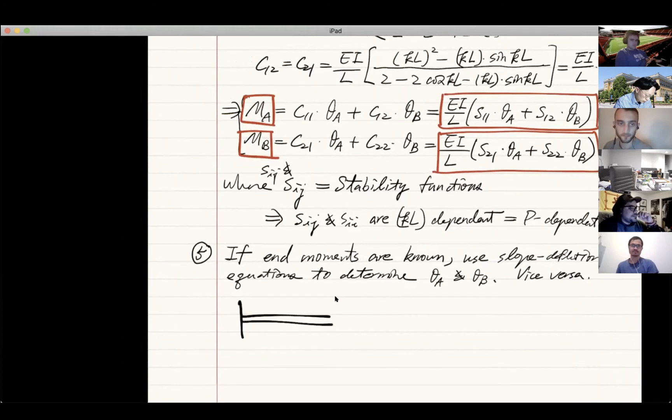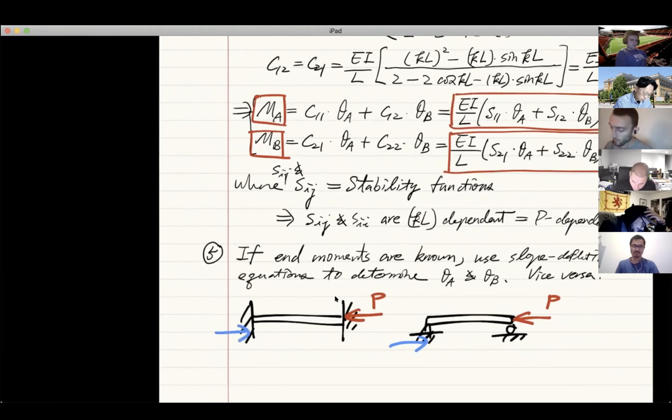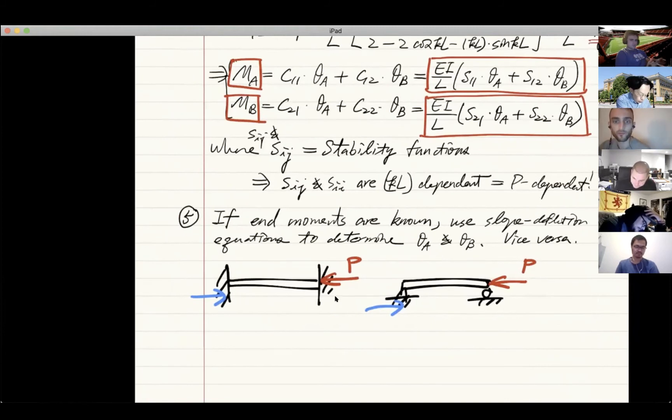Suppose you have a fixed ended and versus you have a simply supported. They're both subjected to buckling force P. Like this. Now in the first case, what should we use? Is that we know the moment or we know the deflection? In the case on the left, what do we know?